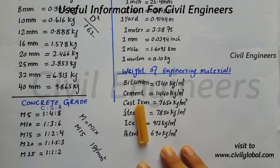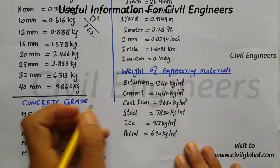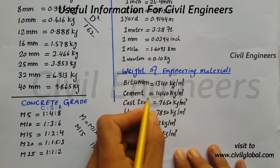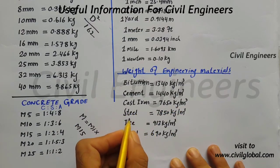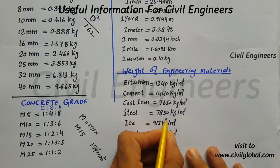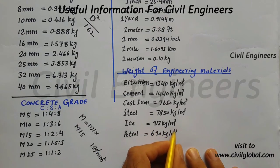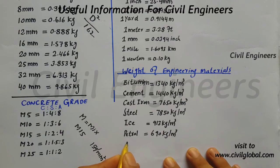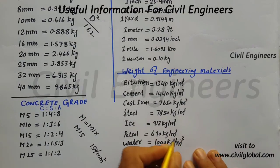Next, the unit weight of engineering materials: bitumen is 1340 kg/m³, cement is 1440 kg/m³, cast iron is 7650 kg/m³, steel is 7850 kg/m³, ice is 913 kg/m³, petrol is 690 kg/m³, and water is 1000 kg/m³.